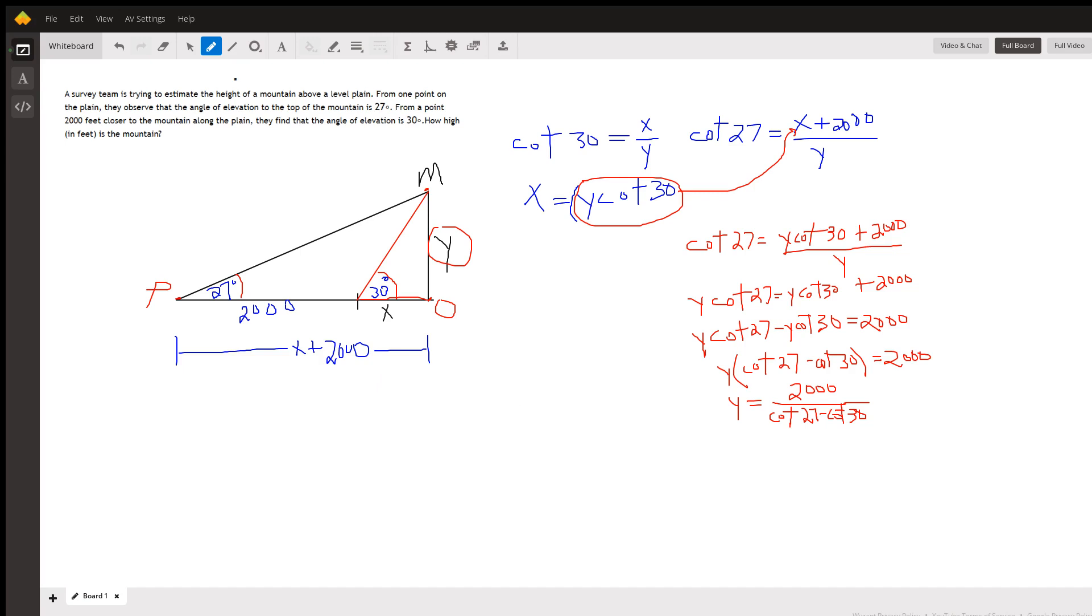So it's true that the cotangent of 30 equals x over y. We could also say the tangent of 30 equals y over x, but then I realize when I'm going to be taking the tangent of this angle 27, I'm going to get x plus y over 2000 plus x. It might be easier to use cotangent so that this binomial is in the numerator.